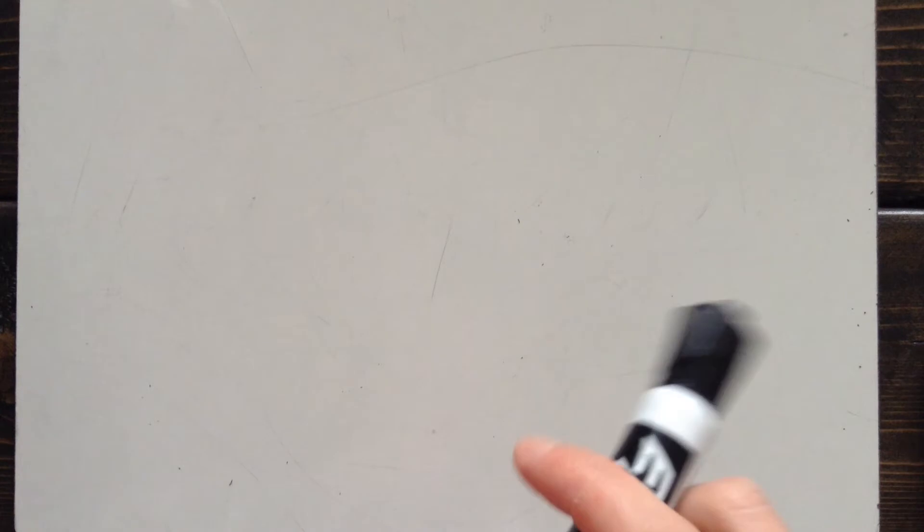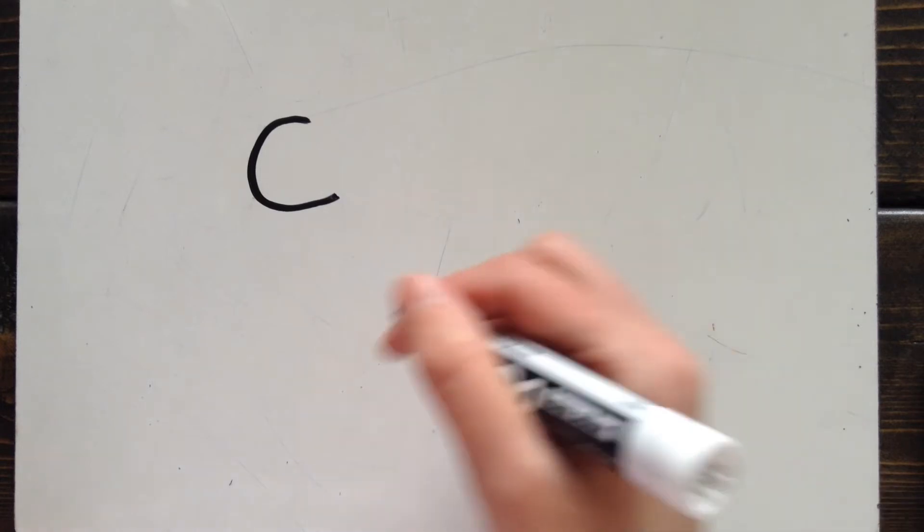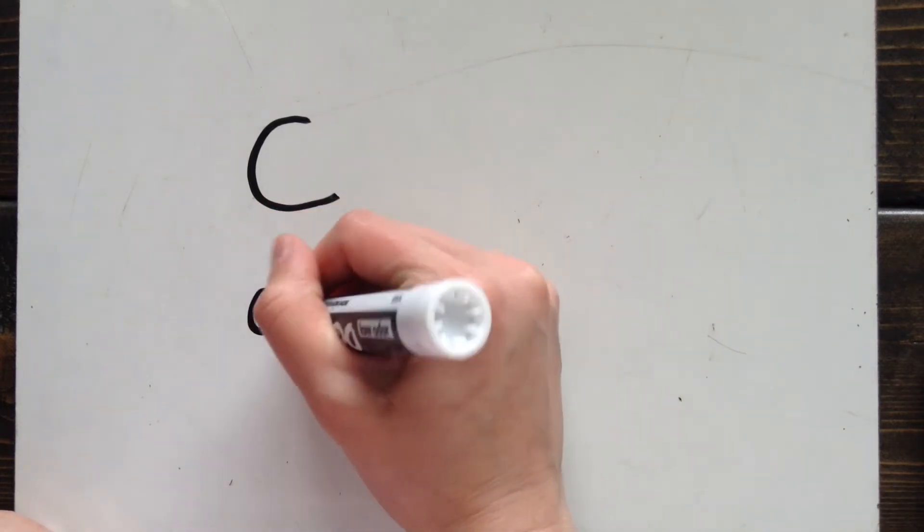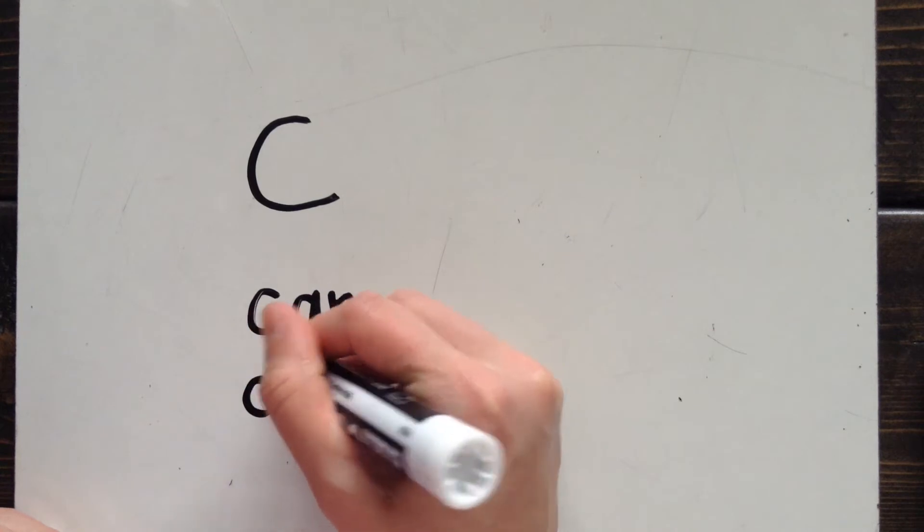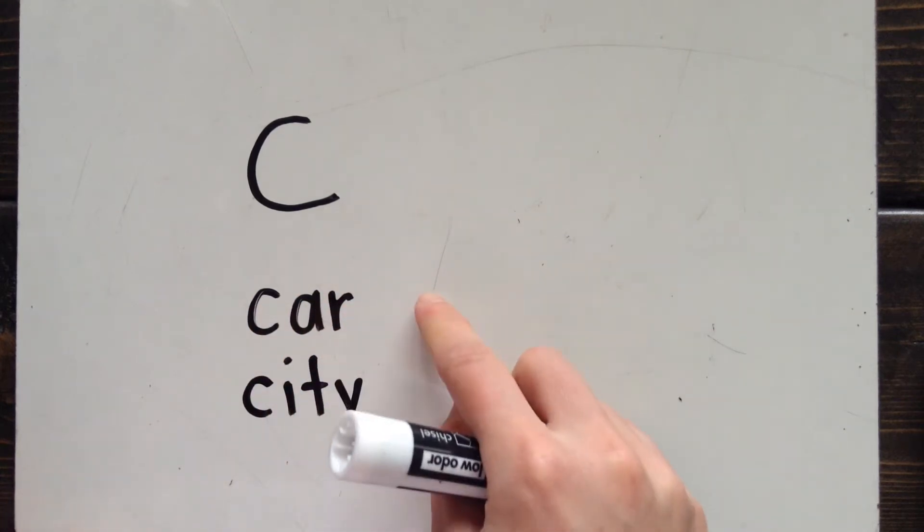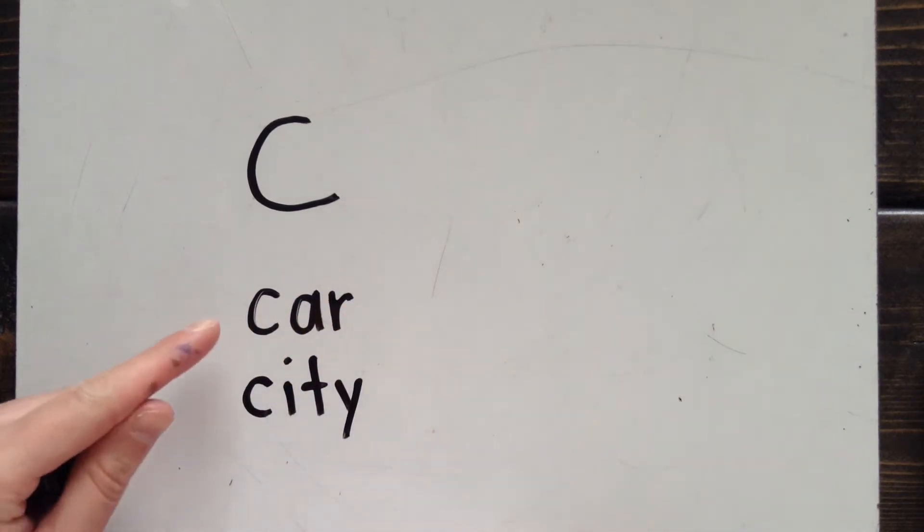The letter C has two sounds. Sometimes the letter C sounds like this: k. Sometimes the letter C sounds like this: s. Here's an example: car, city. Car and city both start with the letter C.